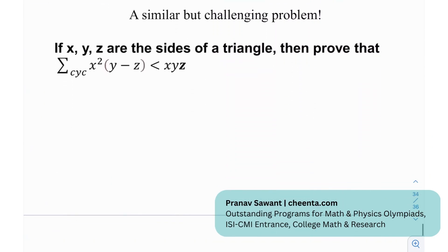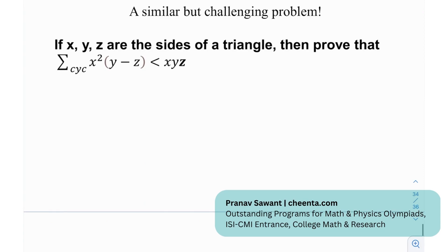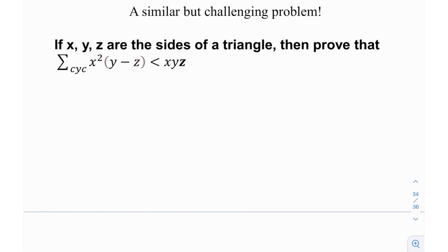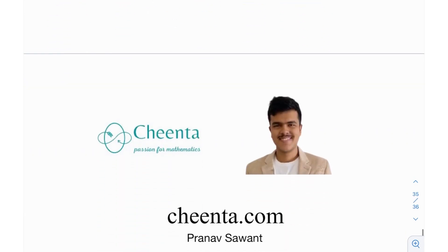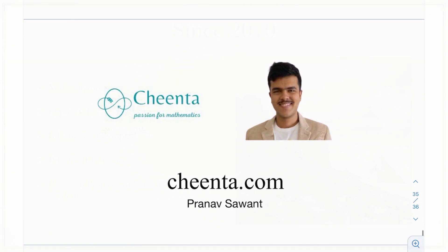Okay, so at the end we have a similar but challenging problem. And again, we have X, Y, Z sides of a triangle so you can without worrying use the Ravi substitution. And I want you to prove that the cyclic sum, the cyclic sum of X squared times Y minus Z will be less than XYZ. And keeping in mind that this is a cyclic sum, not symmetric. So maybe try it out and if you are able to solve it, let me know. Until then, I'll see you in the next video. Thank you very much and bye-bye.